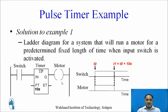Let us understand the working of this solution. At instant T0, the switch changes from 0 to 1, which turns the motor on immediately. At the same time the timer starts with PT equal to 10 seconds. At instant T1, Q resets as ET becomes equal to PT, and the motor stops running. This is the solution for this particular example.